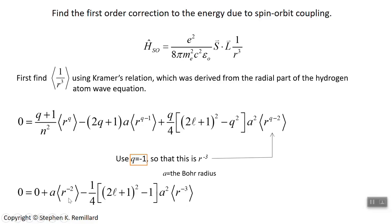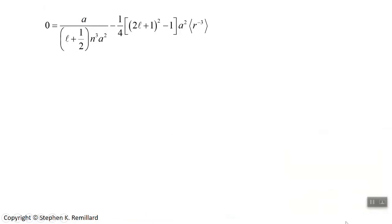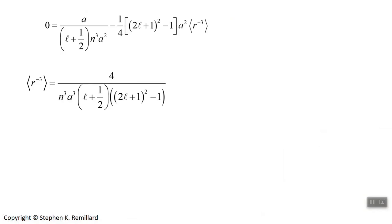Setting Q equals minus 1, the first term goes away and we end up with a relation connecting R to the minus 3 to R to the minus 2, which we fortunately already know from the Hellmann-Feynman theorem. The expectation value of 1 over R squared for any hydrogen atom state is 1 over l plus one half times n cubed times a squared, where a is the Bohr radius. With a little algebra, getting R to the minus 3 on one side and replacing the expectation value of R to the minus 2, we find the expectation value of R to the minus 3. L is the angular momentum quantum number, N is the principal quantum number, and a is the Bohr radius.